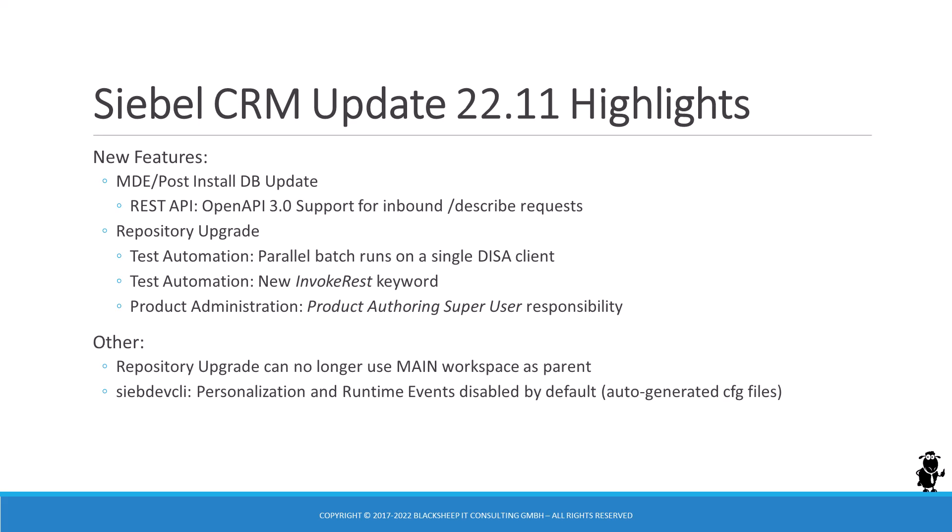The REST API continues to be a focus area for the Siebel engineers. In the November 22 release, Oracle adds support for OpenAPI 3.0 for service descriptions in inbound REST APIs. In the test automation realm, we now find support to run multiple test executions in parallel on a single machine, along with the ability to send requests to the Siebel inbound REST API from steps in a test script. Product administrators can rejoice — a new responsibility bestows the bearer with super-user powers to unlock versioned objects that have been locked by another user. Other interesting enhancements in 22.11 include the enforcement of using an integration workspace other than main as the parent for the optional repository upgrade utility, and the disablement of personalization and runtime events for automated Siebel dev CLI executions.